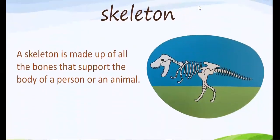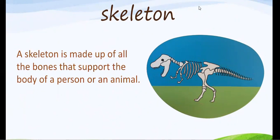Our next word is the word skeleton. A skeleton is made up of all the bones that support the body of a person or an animal. Look at this picture — what do you think this is a skeleton of? It is a skeleton of a dinosaur. Look at the bones, the hands, the feet. It's what we kind of look like on the inside, but this obviously is a dinosaur. Can we all say skeleton together? Skeleton.